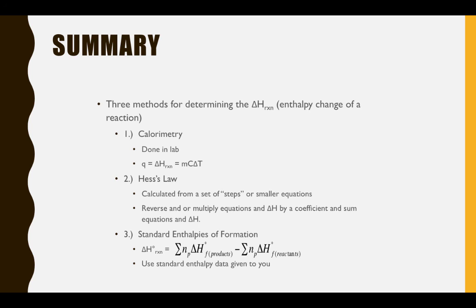First, we looked at calorimetry, which uses a coffee cup calorimeter and the specific heat equation. Then we used Hess's law to sum up a series of steps to determine the delta H for a larger reaction. And finally, we looked at standard enthalpies of formation, which use standard enthalpies of formation of products and reactants to calculate the delta H of reaction.